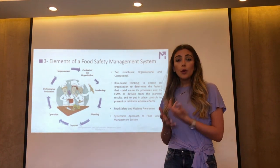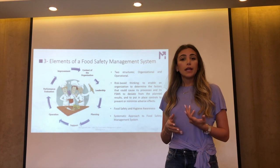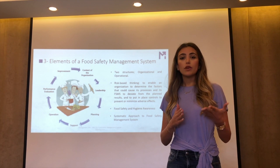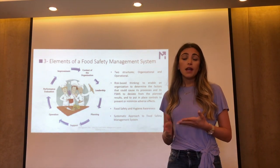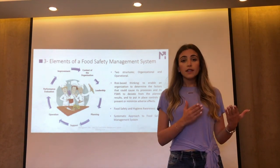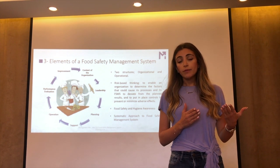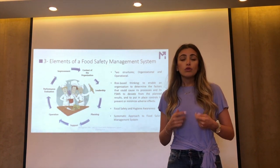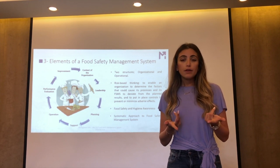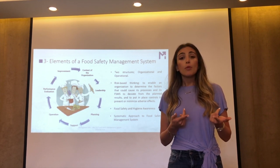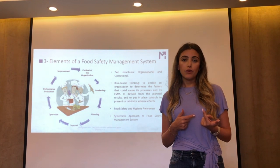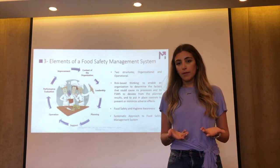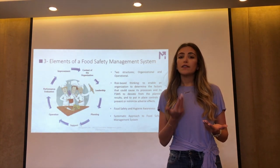When we talk about the operational structure, the standard requires that the organization assesses the hazards at every stage of the cycle in the food chain and sets control measures for each hazard to control them. It is not only necessary to implement control measures to face the hazard, but also important to monitor the effectiveness of those control measures — it is not sufficient to just implement the food safety management system, but to monitor its effectiveness.